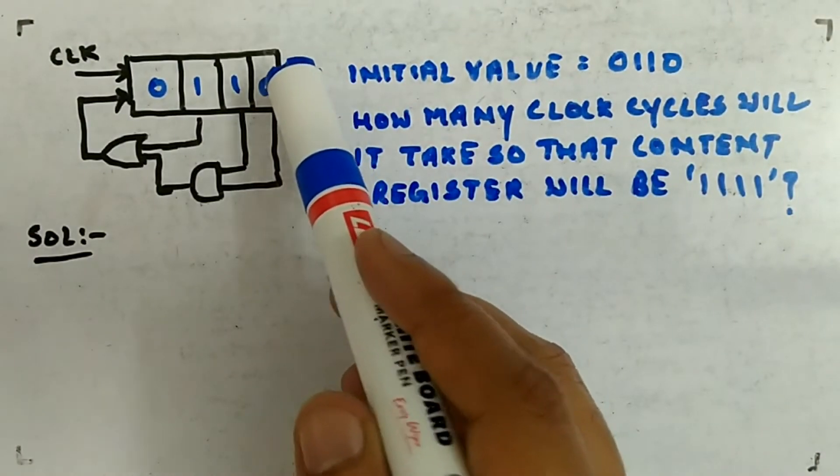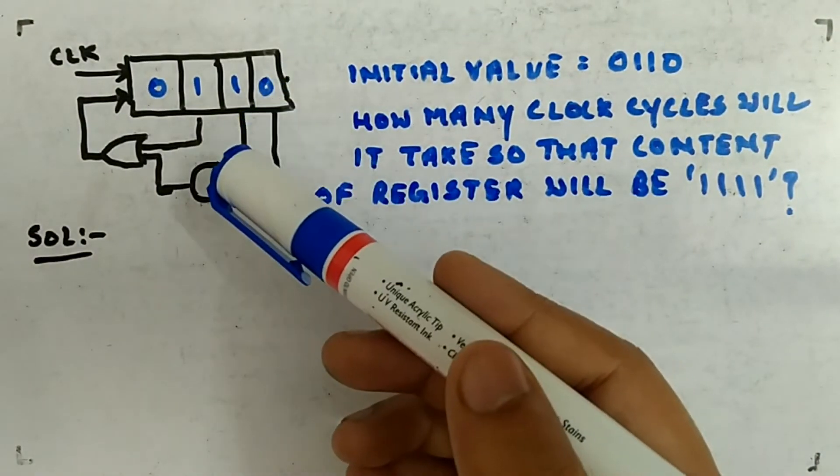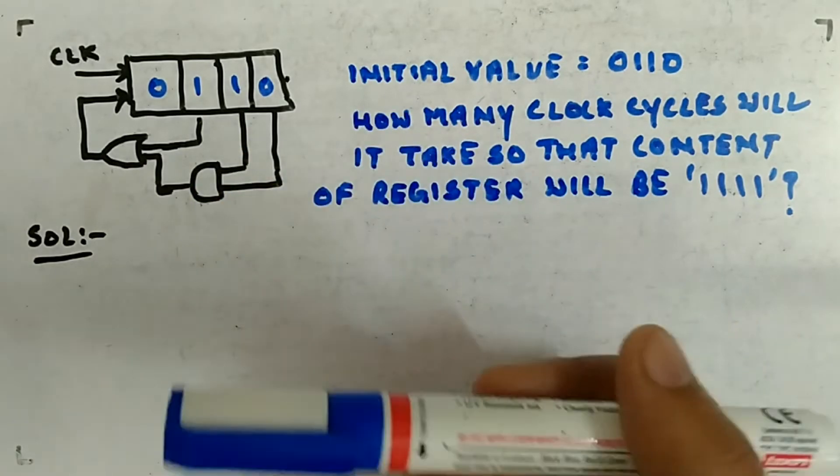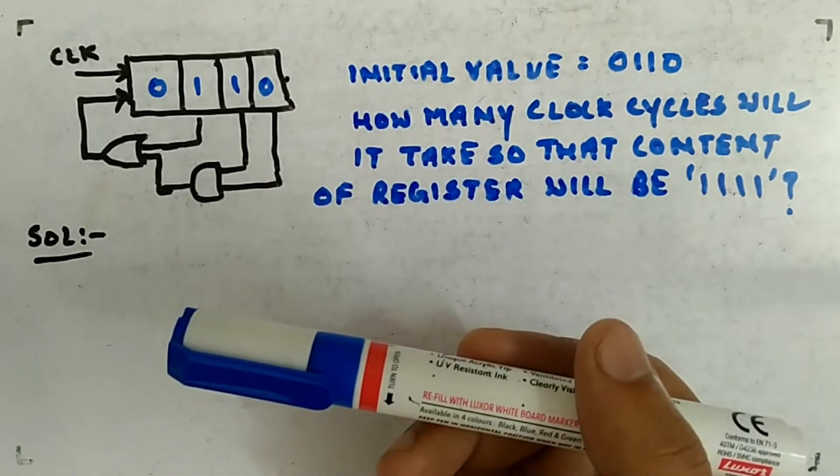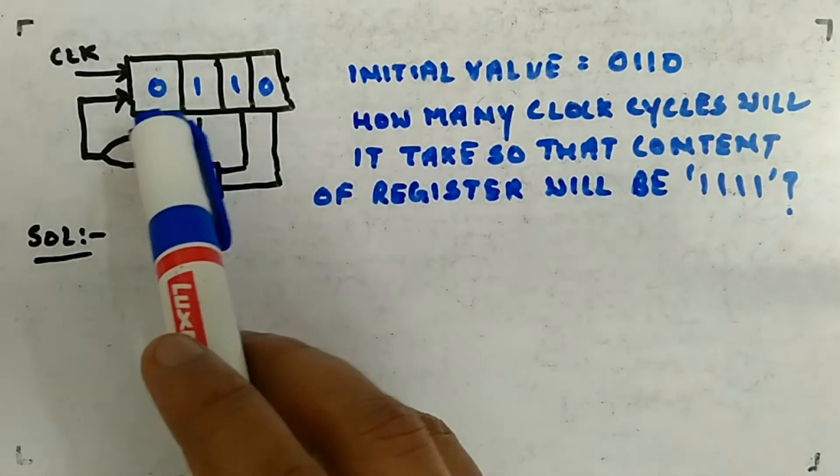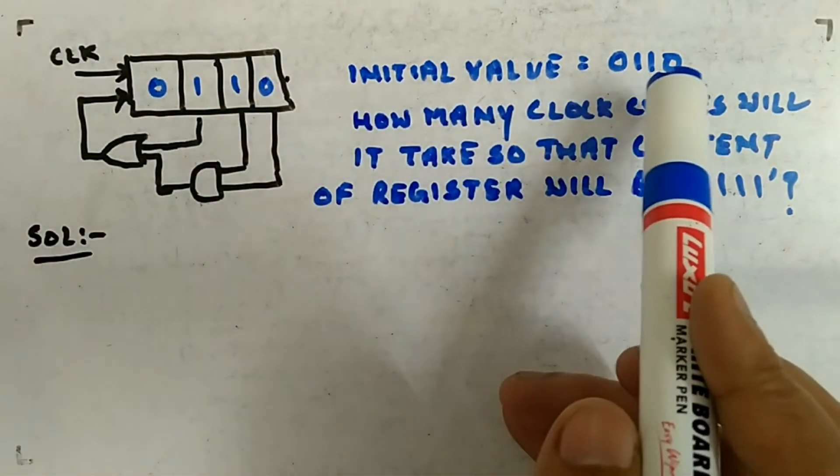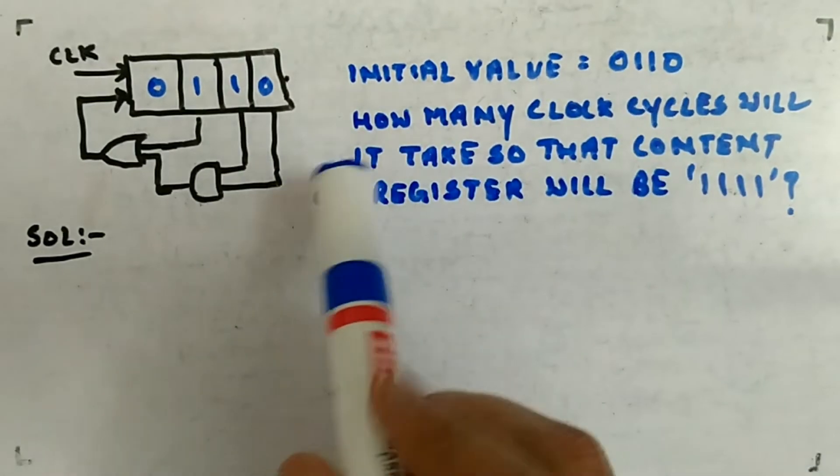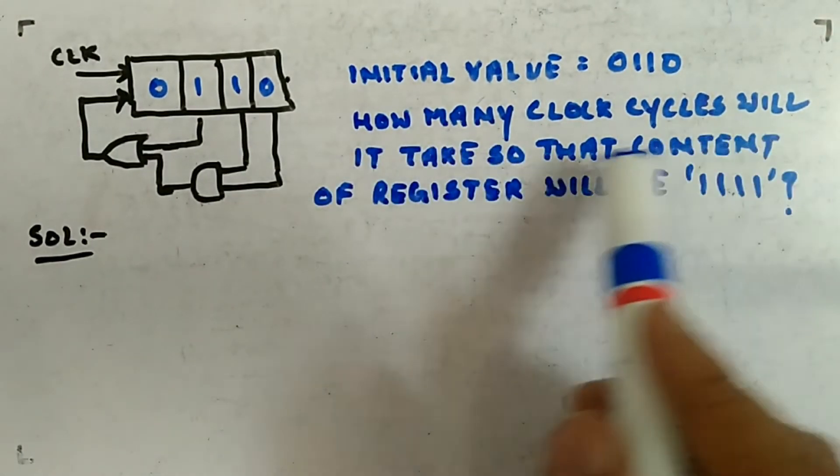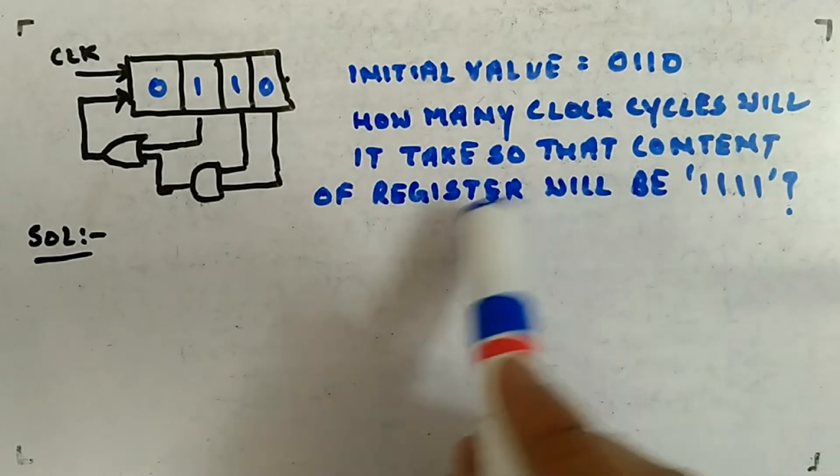It's not necessarily that the output will be taken from the end flip-flop only. Output can be taken from anywhere as well, so parallel out kind of you can imagine. The initial value loaded to the register is 0110.